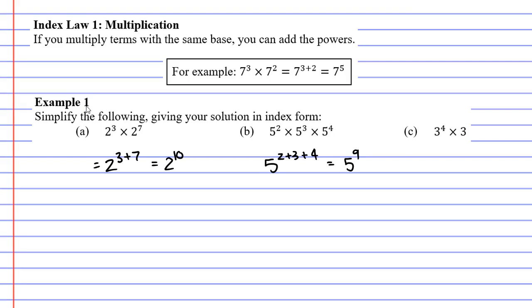Now moving on to question C, you'll notice that we've got a power of 4, and the other number doesn't have a power. Now what you need to remember is that when it doesn't have a power, technically it's got a 1 there. 1 meaning I've only got one 3. Now we can add them up. The base number is 3, 4 plus 1 gives us 3 to the power of 5. And that concludes our video on index law 1.